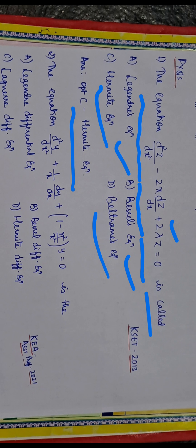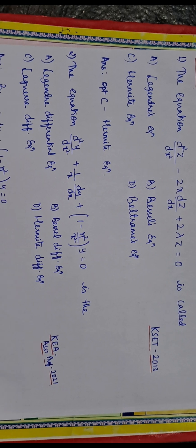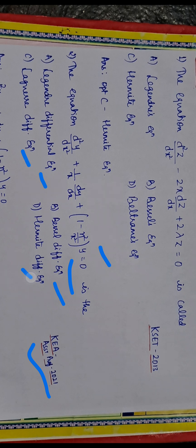Here is another question from the 2021 assistant professor recruitment exam: The equation d²y/dx² + (1/x) dy/dx + (1 − n²/x²)y = 0 — is this the Legendre differential equation, Bessel's equation, Laguerre's equation, or Hermite's differential equation?